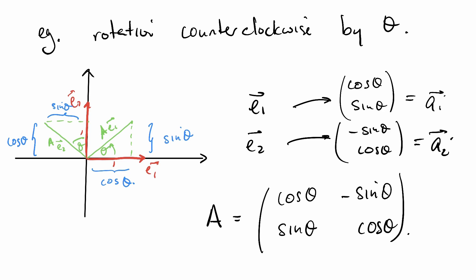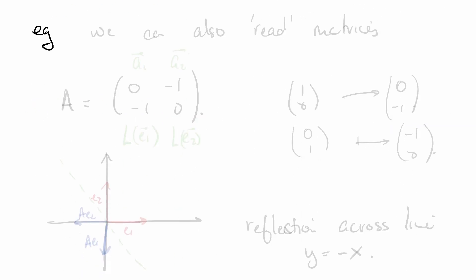We can also use this to read matrices. Say I told you that there's a linear transformation represented by this matrix. What does it do? Well, the first column is A_1 and the second column is A_2.